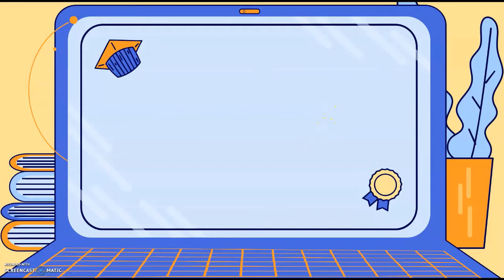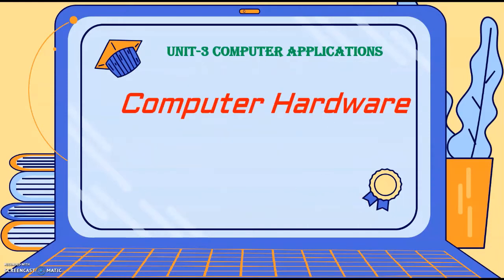Good morning dear students. Today we are going to learn Unit 3: Computer Applications. In this chapter we will mainly learn computer hardware. Hardware means the physical components of the computer — the machinery parts, or in other words, the parts which we can see and touch. For example, storage devices like a pen drive, keyboard, mouse — all input devices and output devices like monitor — all these are examples of computer hardware.